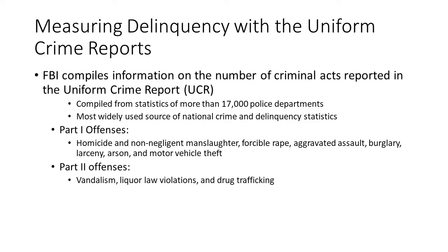The UCR can be broken down by region — the East Coast, West Coast, the North, and the South — and that's primarily for the serious crimes, which are found in Part 1. The crimes designated as Part 1 are our serious crimes: murder, robbery, rape, manslaughter, arson, assault, theft, and motor vehicle theft.